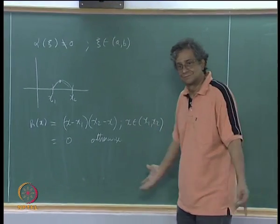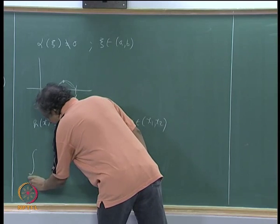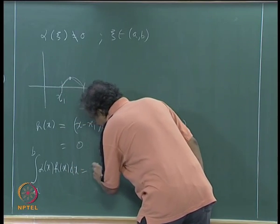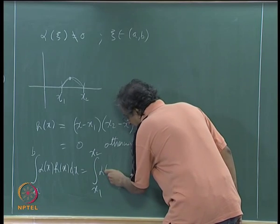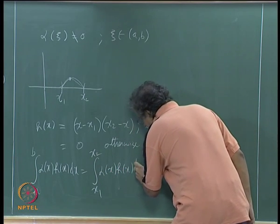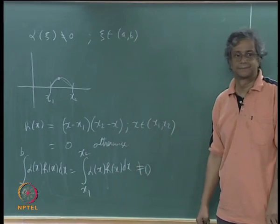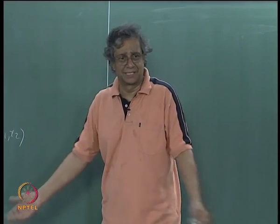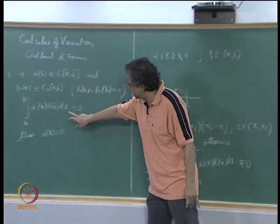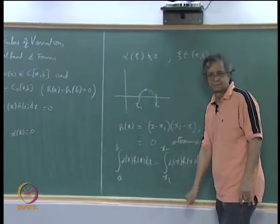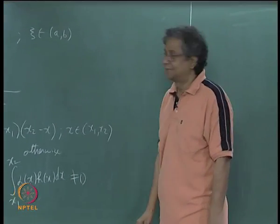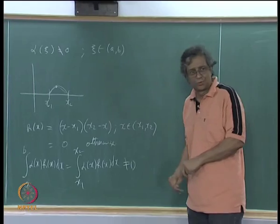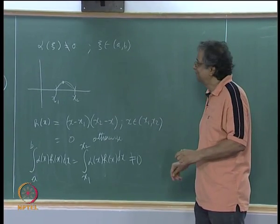Then the integral from A to B of alpha(x) h(x) dx equals the integral from x1 to x2 of alpha(x) h(x) dx, which is not equal to 0 — violating my guarantee. The only way I can guarantee the integral is 0 for any such h is if alpha(x) is identically 0 everywhere. This lemma is just a warm-up; I will not use it directly, but the next level we will use directly.